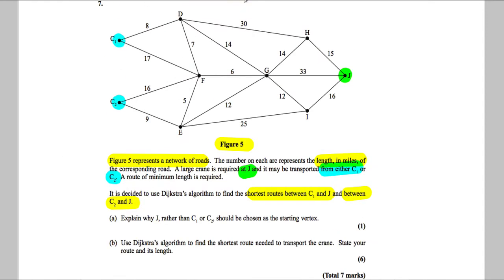This relies on understanding what Dijkstra's algorithm actually achieves. If we start at C1 and perform Dijkstra's algorithm, it would tell us the shortest route from C1 to all points. To find the shortest route between C1 and J, we'd have to do a Dijkstra starting at C1. To find the shortest distance from C2 to J, we'd have to start at C2 and do a different Dijkstra.